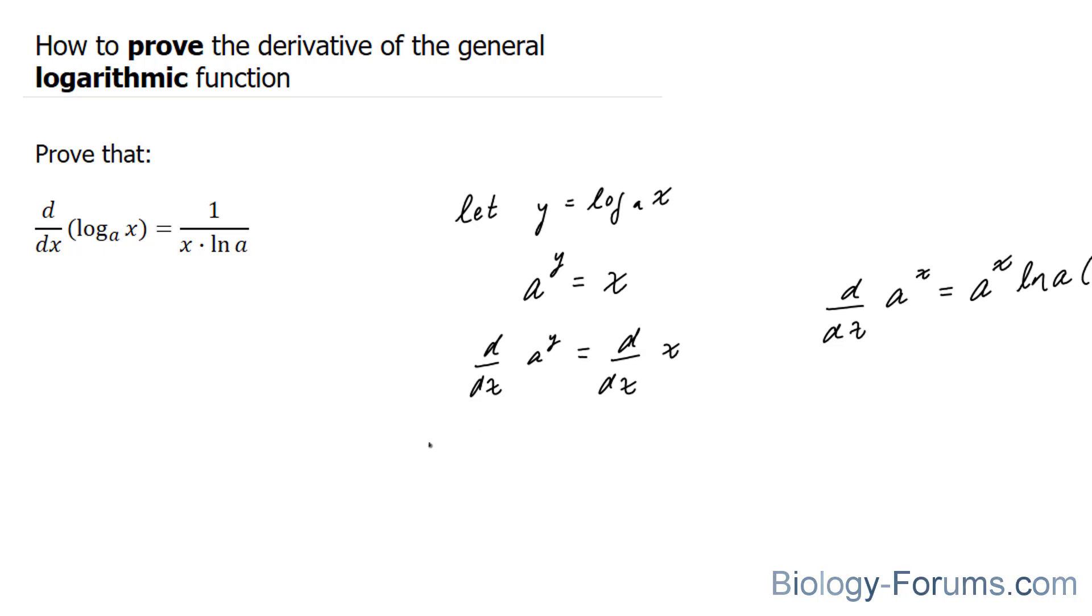So, a to the power of y times ln a times the derivative of y equals 1. Remember, the equation is in terms of x, so we use y' on the left side. On the right side, this simply becomes 1.